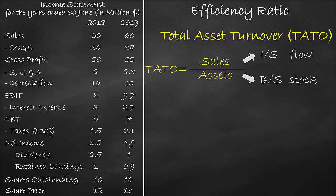In summary, any time you find a financial ratio that includes an item from the income statement and an item from the balance sheet, you will use the income statement item and get the average of the two balance sheet items. So we can rewrite the total asset turnover ratio as sales divided by average assets.